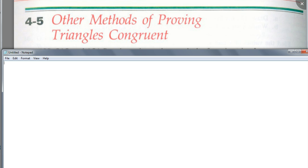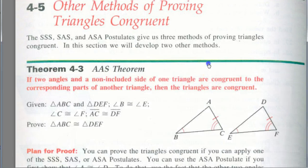Actually there's a fourth method you may not have thought of. Can somebody think of the fourth method? We could actually use it, but no one really would. Proving all six parts are congruent using the definition of congruent triangles — but you wouldn't do that because the other three methods cut down the work. So today we're going to learn this new theorem: Angle-Angle-Side.